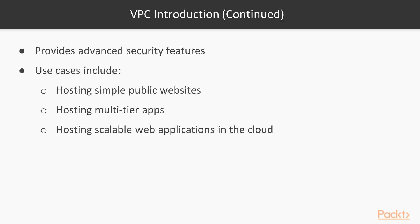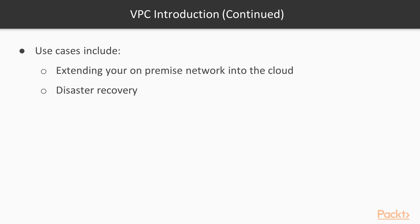You can also host scalable web applications in the cloud that are connected to your data center — think about this as a hybrid approach. You can extend your on-premise network into the cloud, and you can also use VPCs for disaster recovery. So if one of the regions or availability zones goes down, you can have a different implementation of the same infrastructure deployed somewhere else.